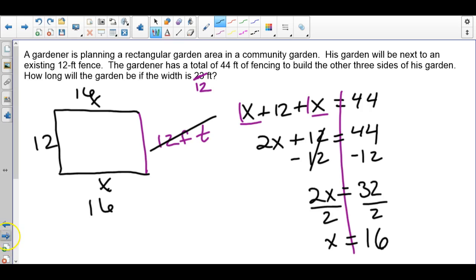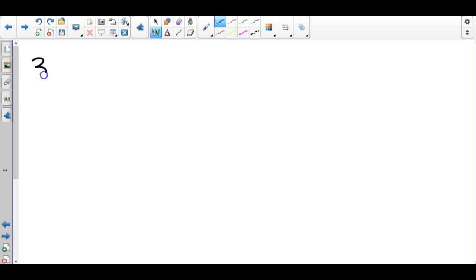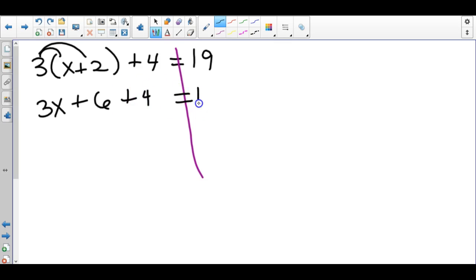We've done a lot of the combine like terms types of problems. Let's look at a distribution problem. Looking at this, we now have parentheses. We still have a left side and a right side. Let's take care of the parentheses first. We multiply this in: 3 times x is 3x, and 3 times 2 is positive 6.